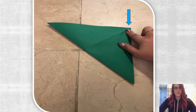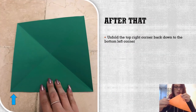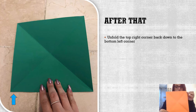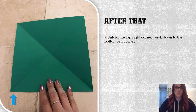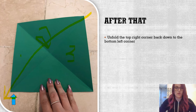After that, unfold the top right corner back down to the bottom left. It should look like this — you should have four triangles. The green paper with the blue arrow shows where we unfold: start from the top and end at the bottom. You should have one, two, three, four triangle shapes.